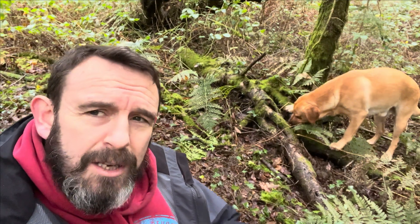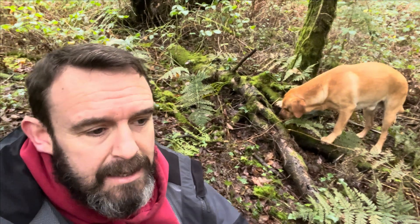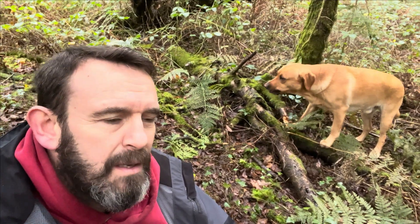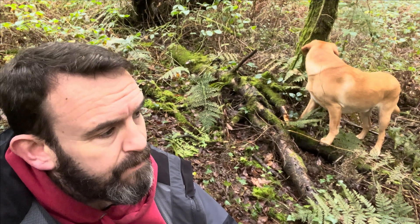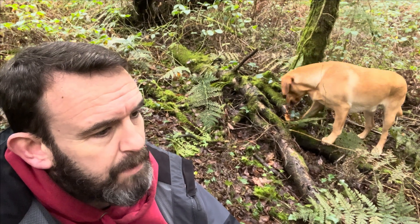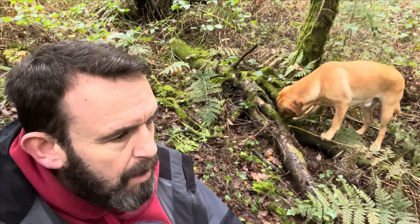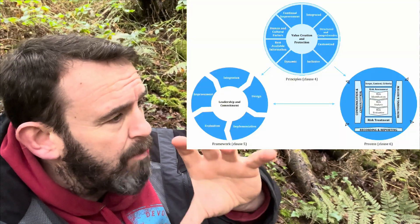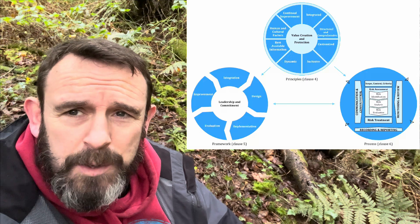So, risk management — this principle is basically telling us that it must be customised. What is getting customised? The framework must be customised, and actually the risk management process itself. ISO 31000 shows us what I call the big three: we've got the principles at the top, then we've got the framework, then we've got the risk management process.